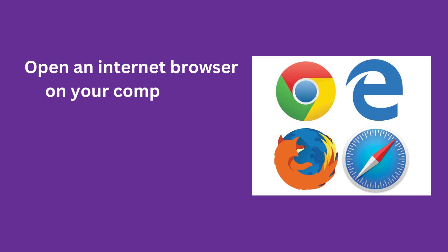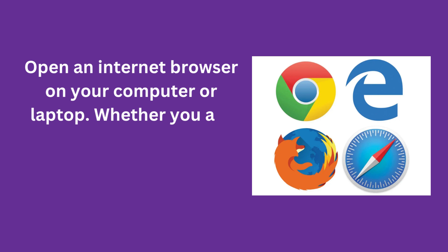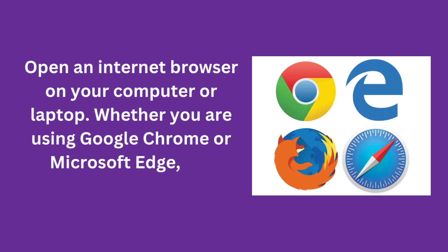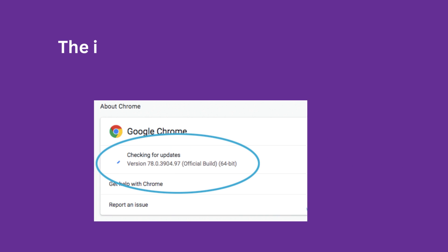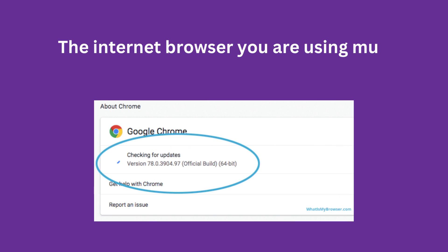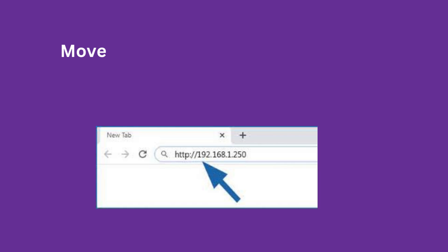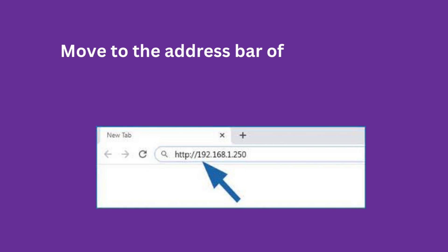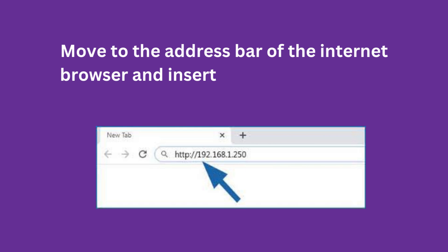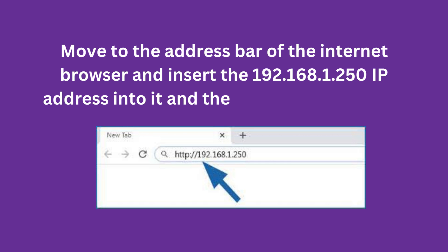Open an Internet browser on your computer or laptop, whether you are using Google Chrome or Microsoft Edge. The Internet browser you are using must be of an upgraded version. Move to the address bar of the Internet browser, insert the 192.168.1.250 IP address into it, and then press the Enter key.